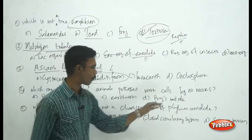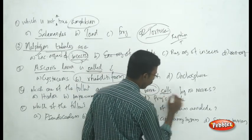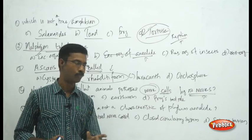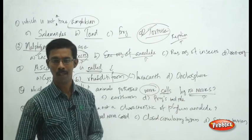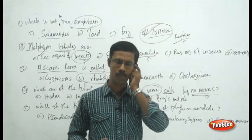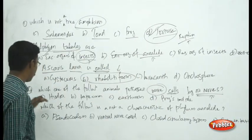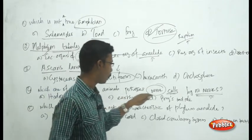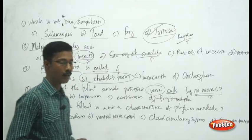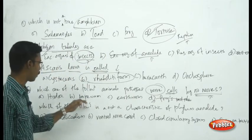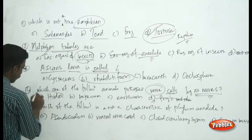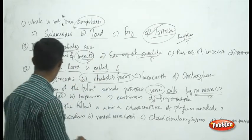See the next question: which one of the following animals possesses nerve cells but no nerves? You can assume the answer will be a primitive form of animal. The choices are hydra, tapeworm, earthworm, and frog tadpole. Frog is the highest form — you can eliminate that. Tapeworm and earthworm have a primitive form of nerves. Hydra has only nerve cells, not nerves. So the answer is hydra.